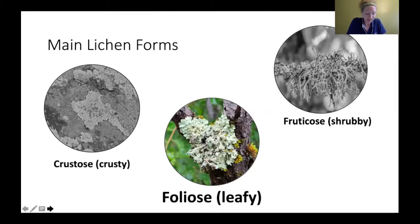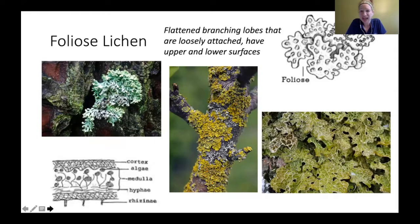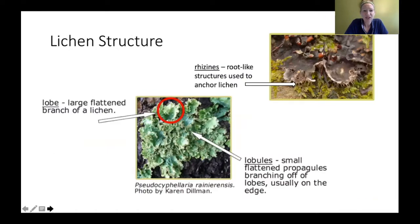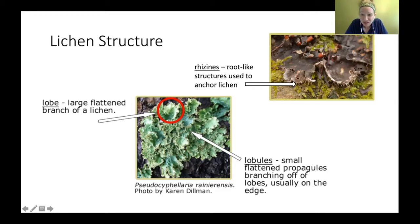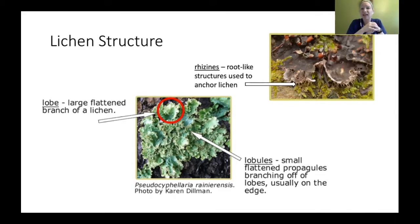The next grouping is foliose or leafy lichen. They are flattened and lobed, loosely attached, and have a distinct upper and lower surface — think of leaves on a tree. They're more two-dimensional. They also have structures called rhizines that look like roots but actually just anchor the lichen to its substrate, similar to how tendrils anchor vines.